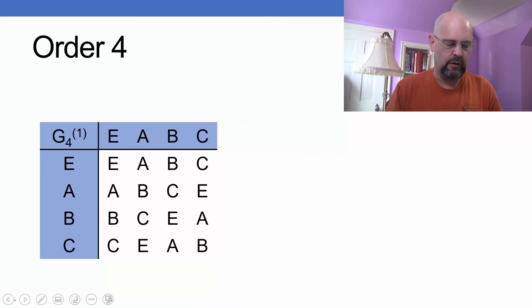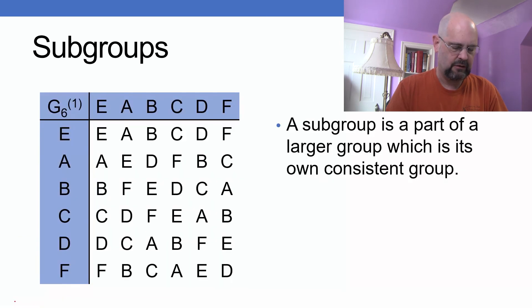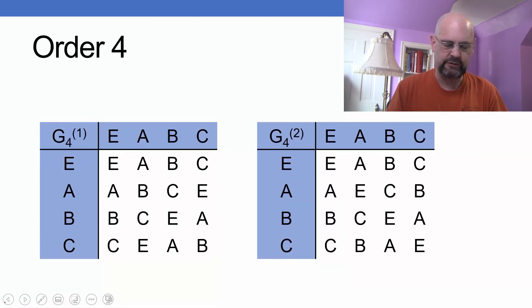I'm just going to give it to fourth order. We can work these out, but this is beyond the course. When I get to larger and larger orders, there are more possibilities for different groups. Any fourth order group, any group with order four, has to have one table or the other.